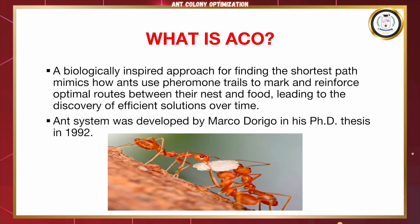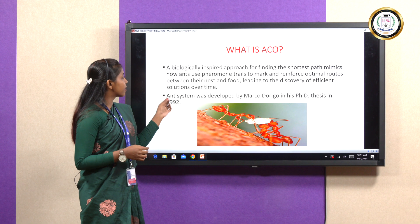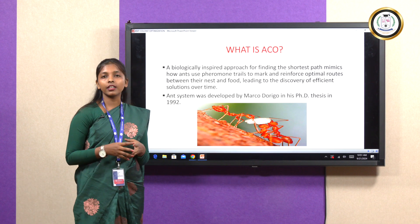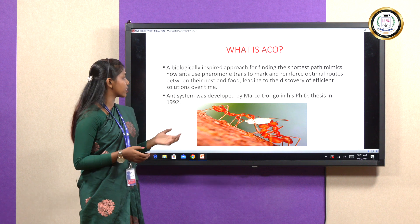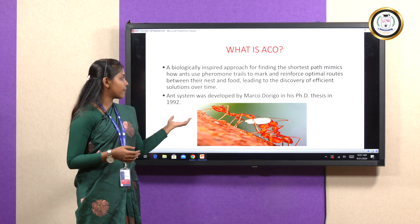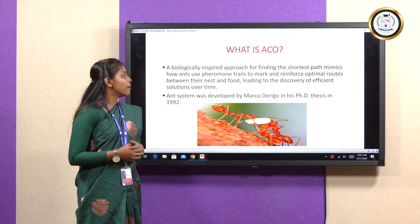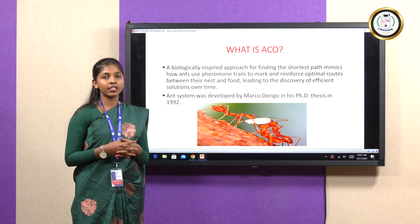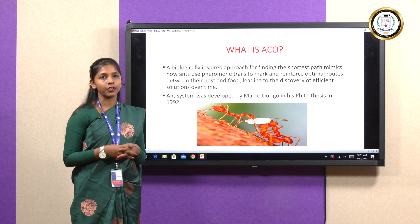It is a biologically inspired approach for finding the shortest path that mimics how ants use pheromone trails to mark and reinforce optimal routes between their nest and food, leading to the discovery of efficient solutions over time. This algorithm was developed by Marco Dorigo in his PhD thesis in the year 1992.